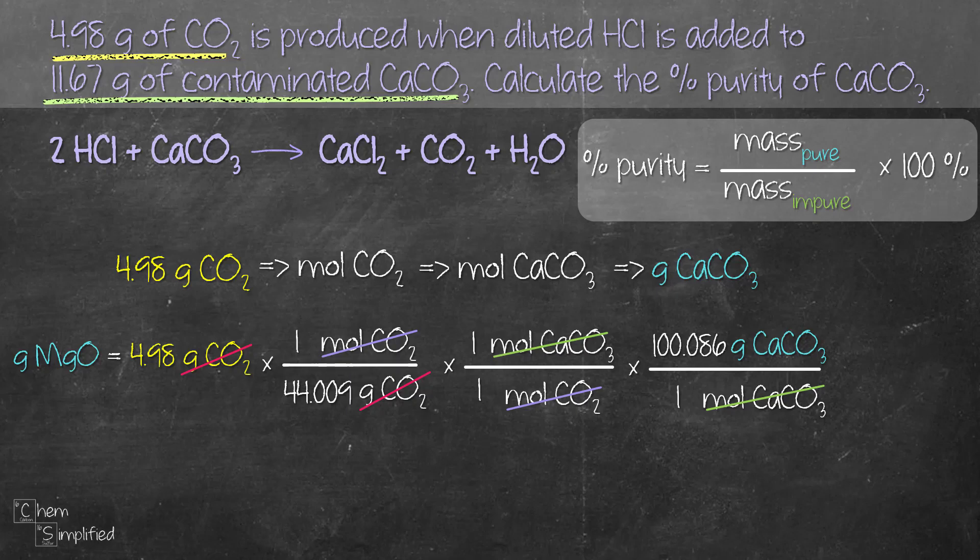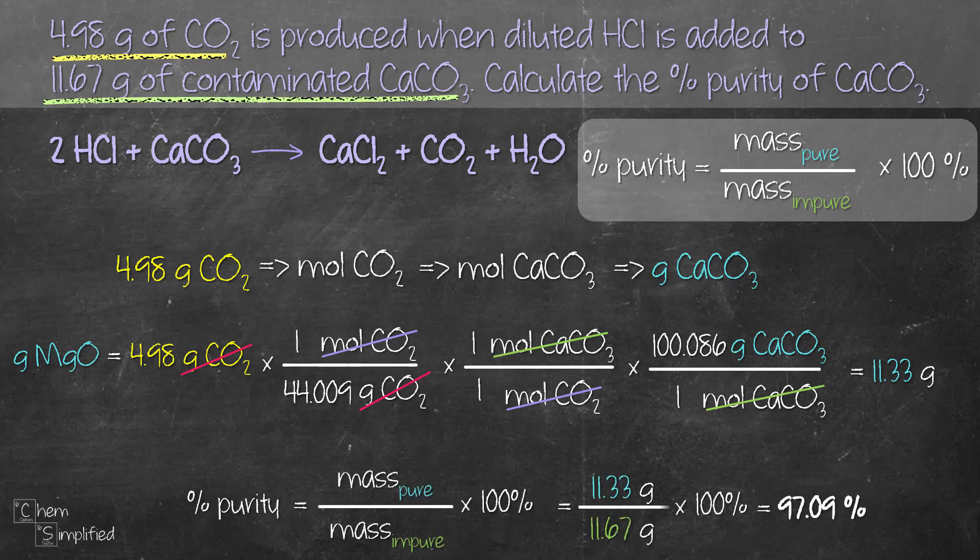We do the math, we take 4.98 divided by 44.009 times 100.086 and that gives us 11.33 grams of CaCO3. With that, we plug in the mass of pure sample with what we've just found and divide it by the given mass of impure sample times 100 and we get 97.09%. To recap,